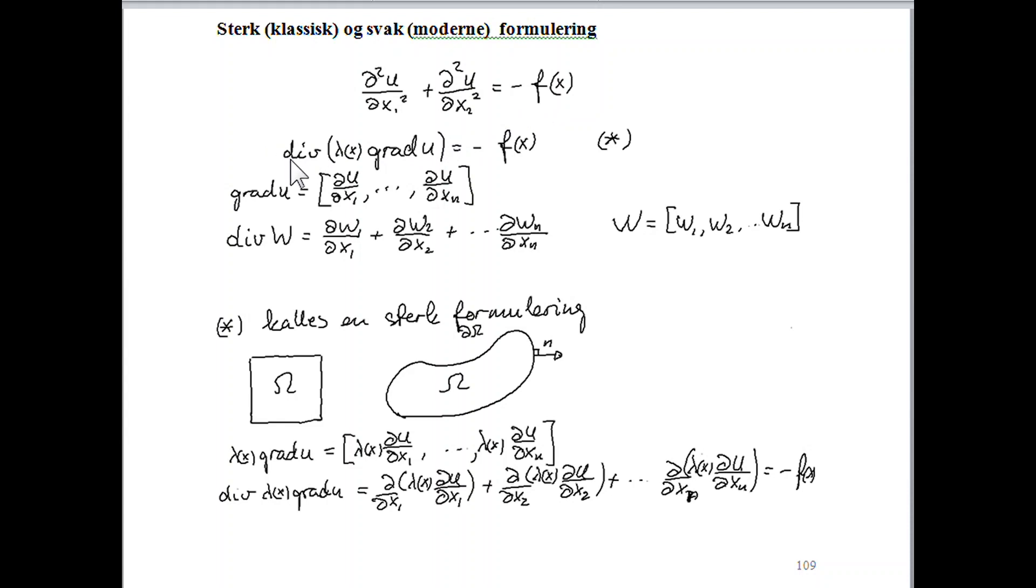The divergence of lambda(x) multiplied with the gradient of u equal to minus f(x), where lambda(x) is called the thermal conductivity, is some more general version of this Poisson equation. So this is called a strong formulation. Omega may be some square, generally some smooth, or it does not need to be a smooth boundary. It is enough, for most purposes, that this surface is Lipschitz continuous, as we have been speaking about earlier.